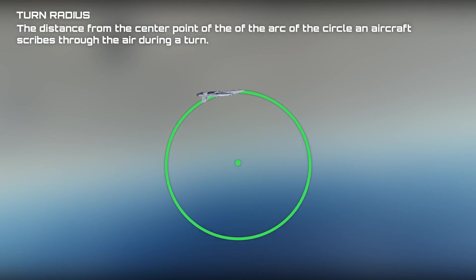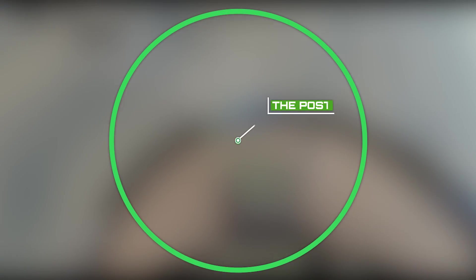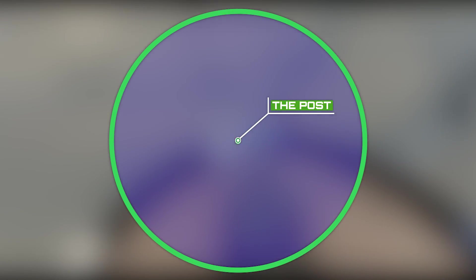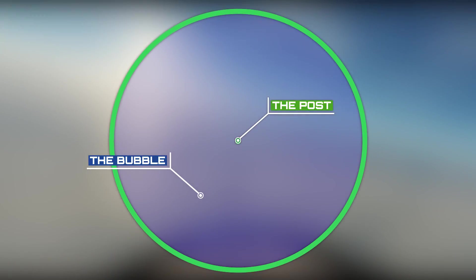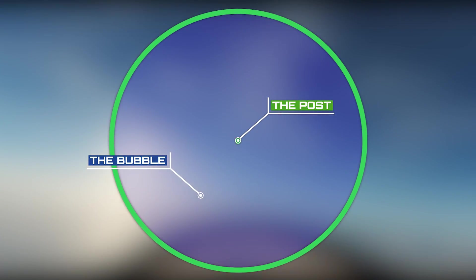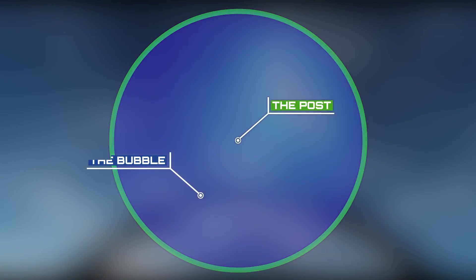Turn radius is a function of true airspeed and G. Without changing our load factor, our turn radius will always increase as airspeed increases. The center of our turn radius is referred to as the post, and the inside volume of the turn radius is called the bubble. The bubble is the inside of the maximum performance turn circle.